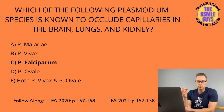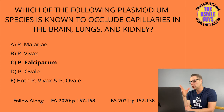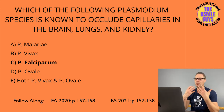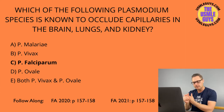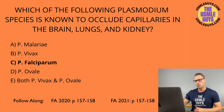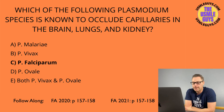Trypanosoma cruzi causes Chagas disease, characterized by dilated cardiomyopathy with apical atrophy, megacolon, megaesophagus, and unilateral periorbital swelling in the acute stage — known as Romaña's sign. This is transmitted by the triatomine insect, also known as the kissing bug, by biting and then defecating around the mouth or eyes, leading to transmission through the bite wound or mucosa. Diagnosis is by identification of trypomastigotes in the blood smear, and treatment is with benznidazole or nifurtimox.